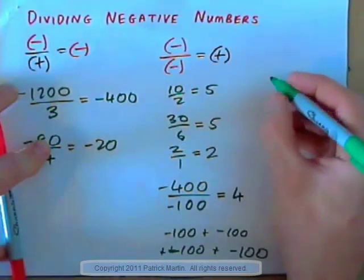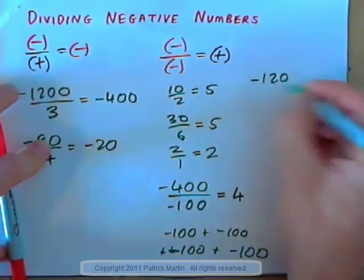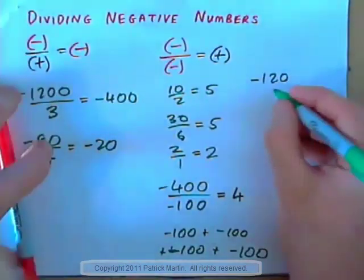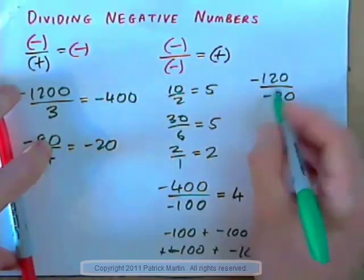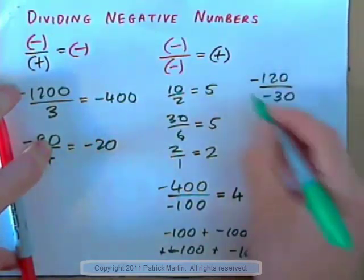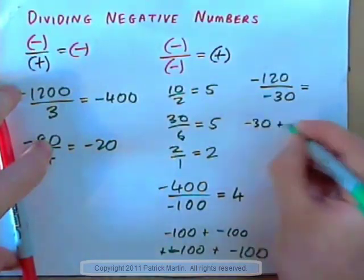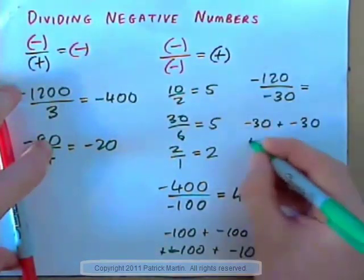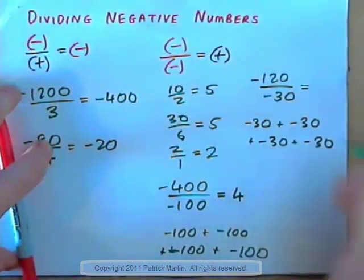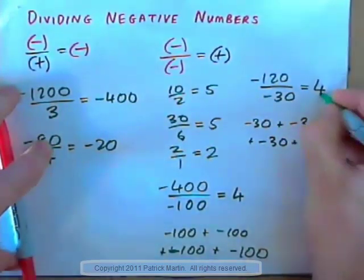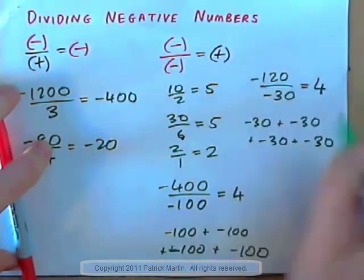Your monthly DSL bill is $30. If you have a total bill of negative $120, how many monthly bills of $30 are contained in a total bill of $120? Negative 30 plus negative 30 is negative 60, plus negative 30 is negative 90, plus negative 30 is negative 120. There are four negative 30's in negative 120. So negative over negative gives positive.